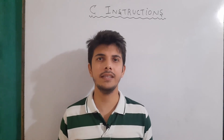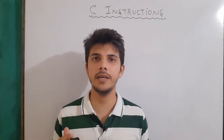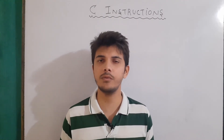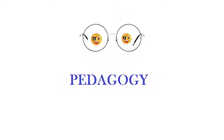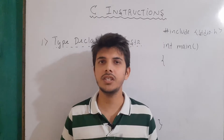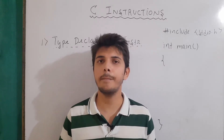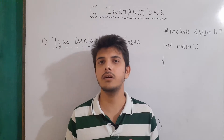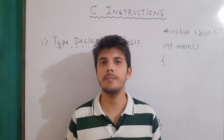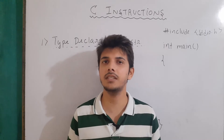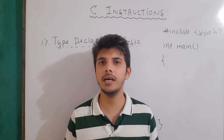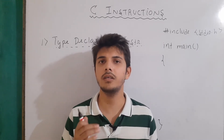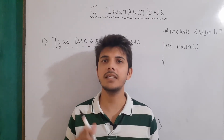Hello guys, in this video we are going to talk about different types of C instructions used in C programming language. C instructions are the instructions given to the compiler by our program to perform certain tasks or actions. Basically, these instructions are of three types: the first is type declaration instruction, the second is arithmetic instruction, and the third is control instructions.